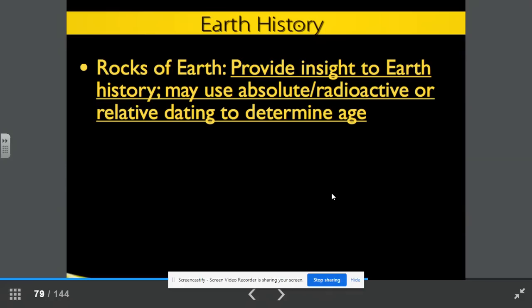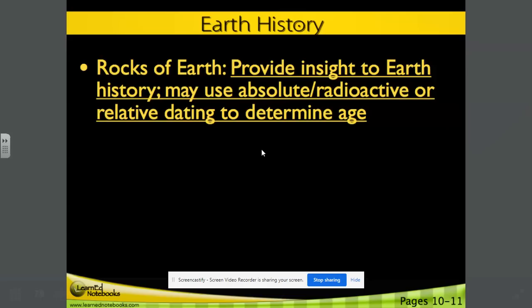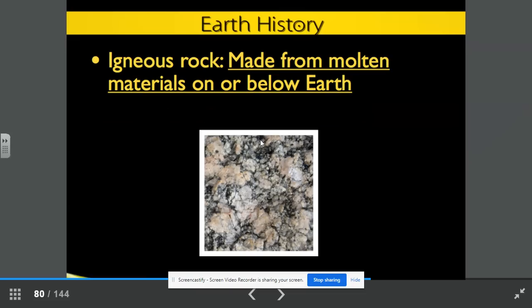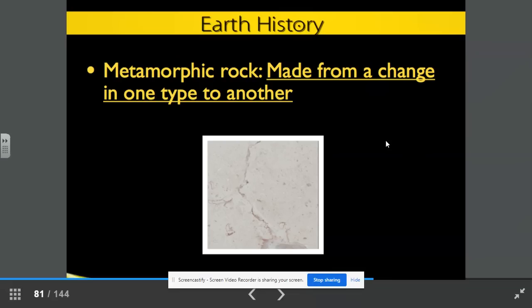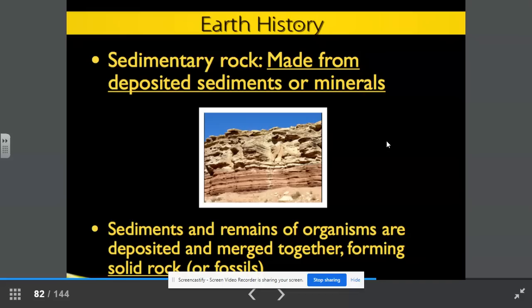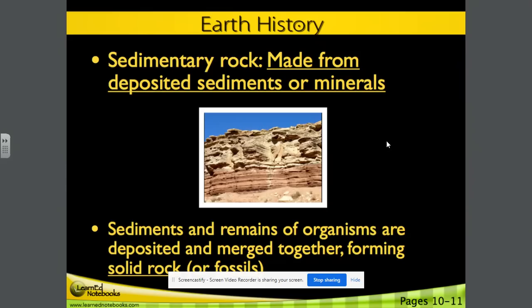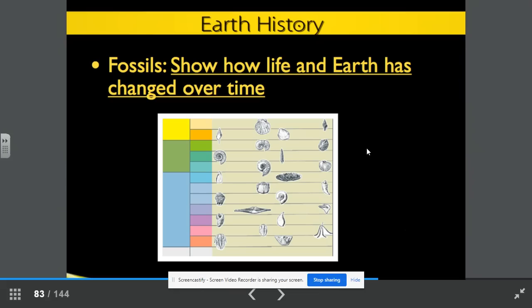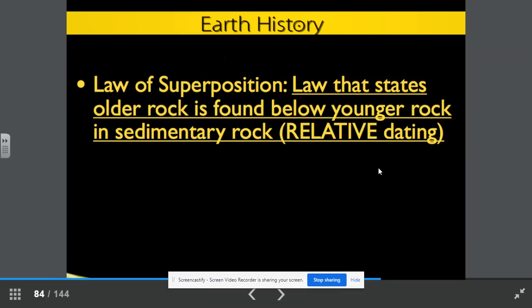The rocks of Earth provide insight to Earth history. They may use absolute or radioactive or even relative dating to determine the age of the rock. Igneous rock is made from molten materials on or below Earth. Metamorphic rock is made from a change in one type to another. Sedimentary rock is made from deposited sediments or minerals. Sediments and remains of organisms are deposited and merged together, forming solid rock or fossils. This is where we find fossils. Fossils show how life and Earth has changed over time. The law of superposition tells us that older rock is found below younger rock in sedimentary rock. This is known as relative dating. You are looking at how old a rock is in comparison with other rocks or fossils.